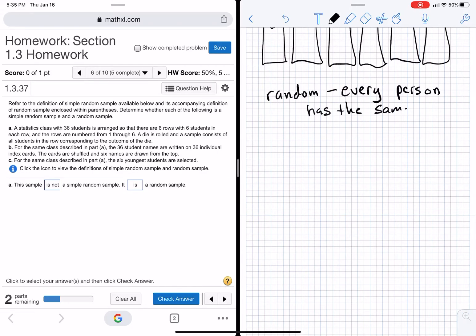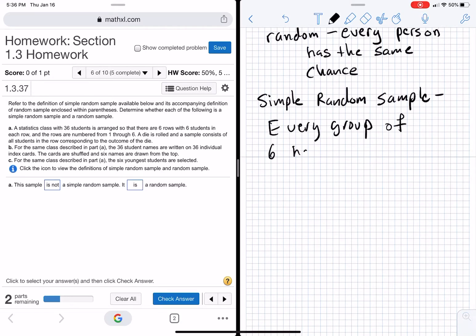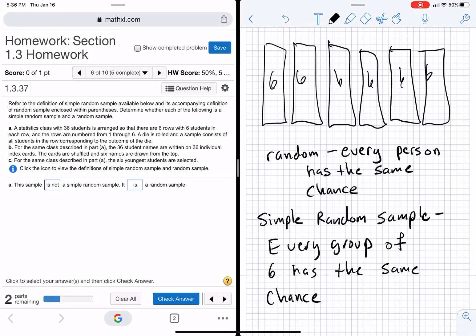Random, every person has the same chance. Simple random sample. Every group of six has the same chance. Okay, so let's see if every person has the same chance. Let's see if it's a random sample. So what they're going to do is they're going to roll a die. Say a three pops up. If a three pops up, these six people get sampled. That's the third row. Let's just go out one, two, three, four, five, six. I roll a die, three shows up. That's the six that's in my sample.